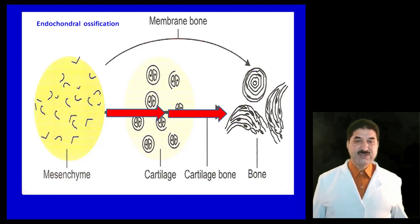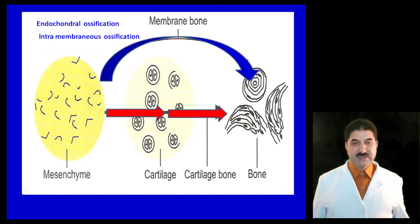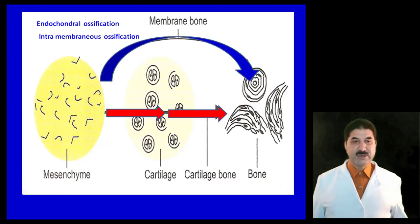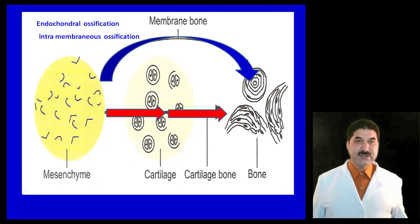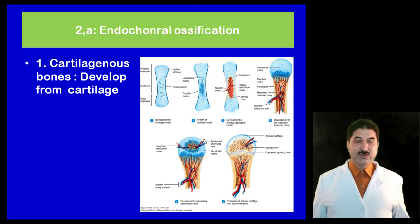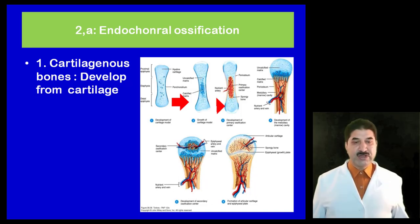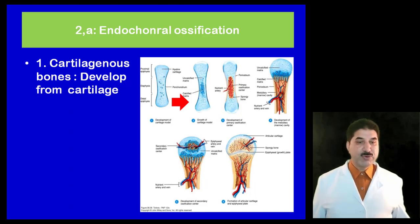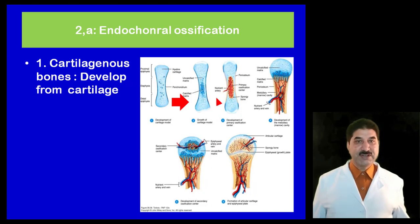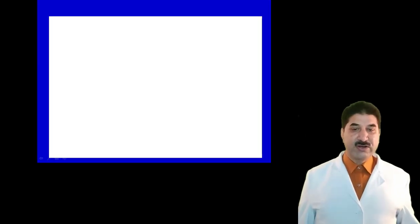Endochondral ossification is true for the bones of the cranial wall, helping in the development of the brain. Cartilaginous bones develop from a cartilaginous model, as shown in the figure — this is true for long bones, where a cartilaginous model is replaced by a bony model. Do not confuse this: the cartilage is not converted into bone. This applies to long bones of the upper limb such as radius, ulna, and humerus.